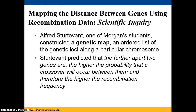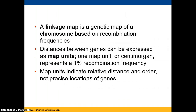The distance between genes can be mapped — a relative map at least — by using recombination data. Alfred Sturtevant, who was one of Morgan's students, constructed what we call a genetic map, which is an ordered list of the genetic loci among a particular chromosome. Sturtevant predicted that the farther apart two genes are, the higher the probability that a crossover will occur between them, and therefore, the higher the recombination frequency.